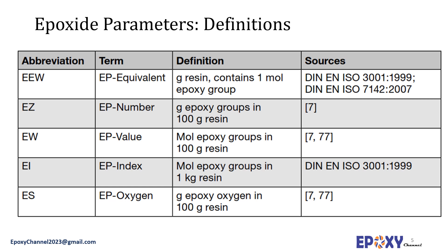Another way to present the epoxy content is the EZ value, or EP number — the epoxy number — which is the grams of epoxy groups in 100 grams of resin. So with EEW we have grams of resin containing one mole, whereas here we have grams of epoxy groups in 100 grams of resin. Another way to present epoxide content is the EW value, called epoxy value, which is moles of epoxy groups in 100 grams of resin.